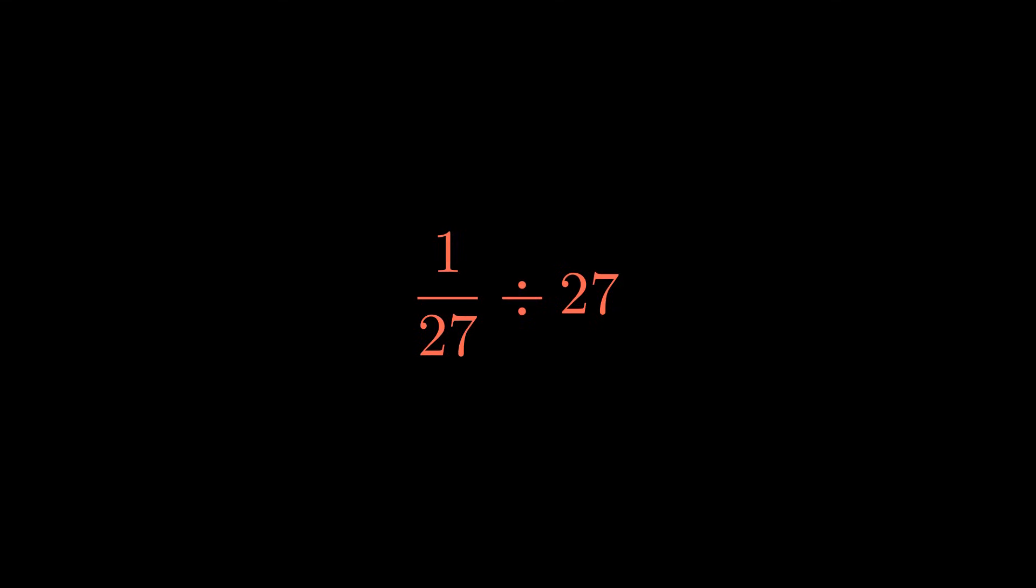1 over 27 divided by 27. Now, when dividing by a whole number, we can rewrite this using the keep-change-flip method. We keep the first fraction, change division to multiplication, and flip the 27 to get 1 over 27. Multiply across the top and bottom, and we get 1 over 729.